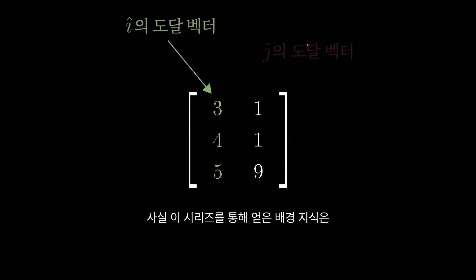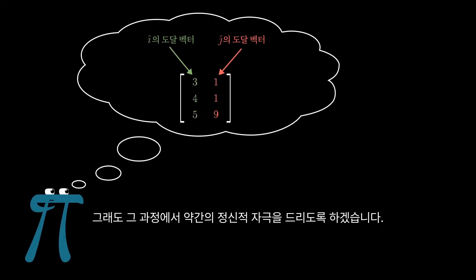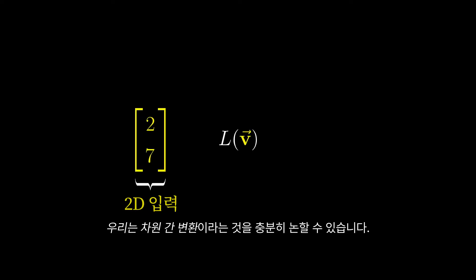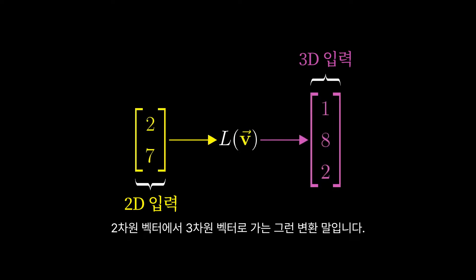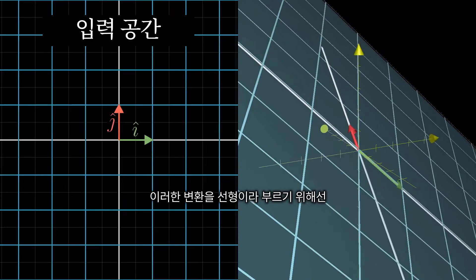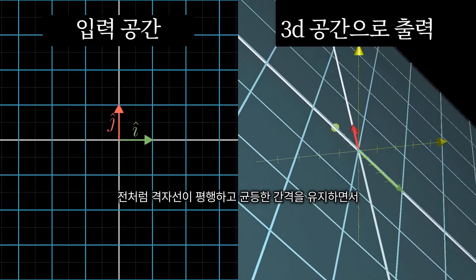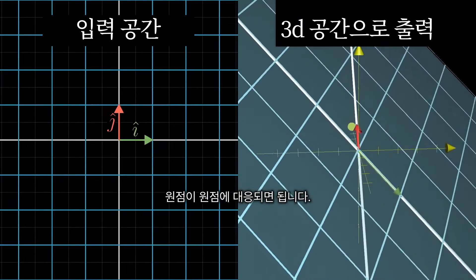By now in the series, you actually have most of the background you need to start pondering a question like this on your own, but I'll start talking through it just to give a little mental momentum. It's perfectly reasonable to talk about transformations between dimensions, such as one that takes 2D vectors to 3D vectors. What makes one of these linear is that grid lines remain parallel and evenly spaced, and that the origin maps to the origin.